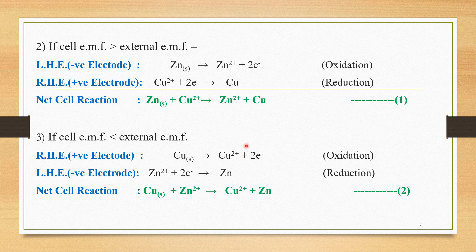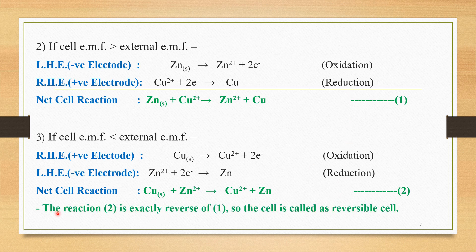We now have two different net cell reactions. If we look carefully at these two reactions, cell reaction 2 is exactly the reverse of cell reaction 1. So the cell is called a reversible cell because when we change the EMF condition, we get the reverse reaction.